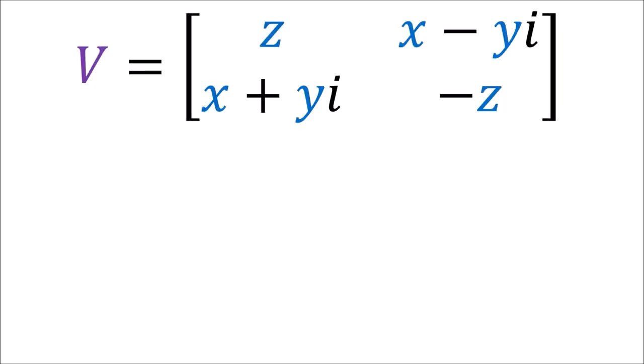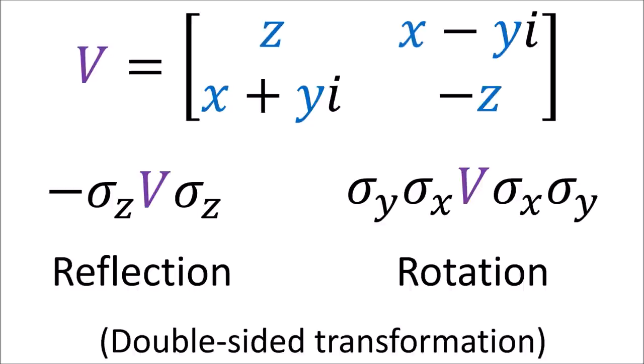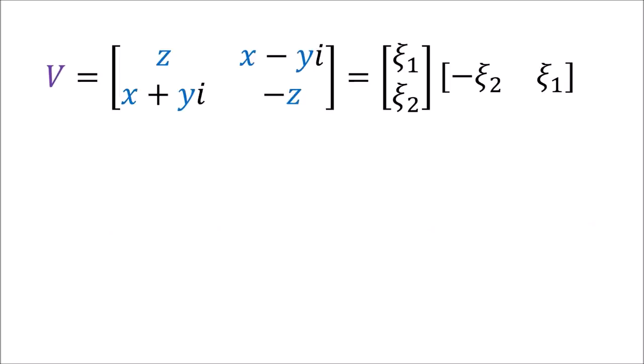I show how we can define reflections and rotations of Pauli vectors using operations that are double-sided. And then I show how some Pauli vectors can be factored into a column and a row which are spinors.